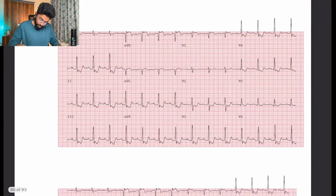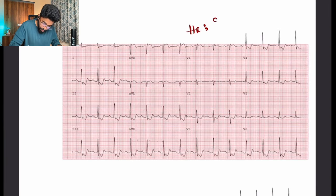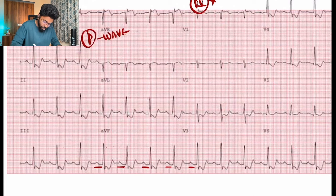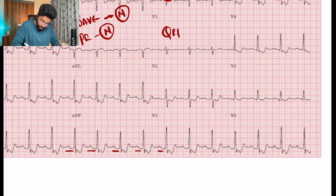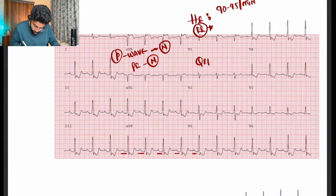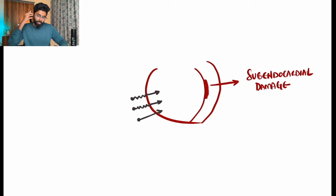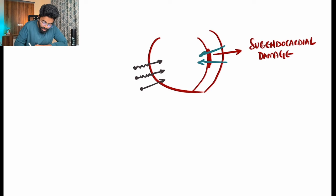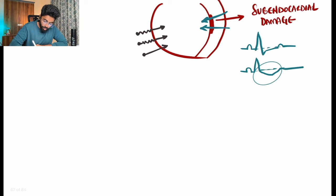For the next ECG: heart rate around 90 to 95, regular rhythm, PR is normal. The QRS in the standard leads is normal but with ST depression — this can be NSTEMI. The damage is present at the subendocardial level. The vector of the ST goes in the opposite direction and is represented by leads directly above it as a depressed wave.